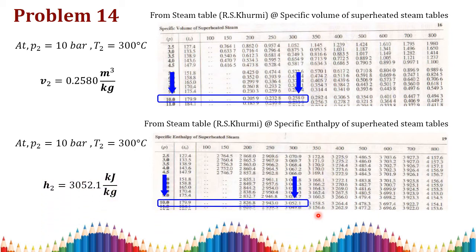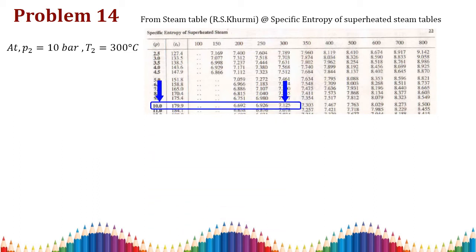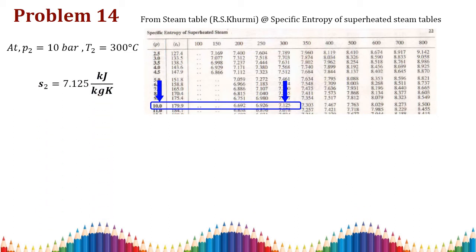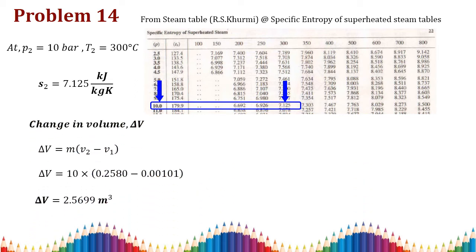From the superheated steam table at 10 bar and 300°C, the specific enthalpy h2 equals 3052.1 kJ/kg, and the specific entropy s2 equals 7.125 kJ/kg·K.